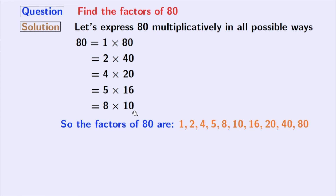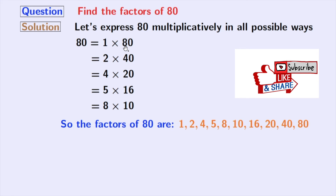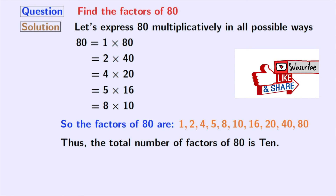So here are the factors of 80, which are 1, 2, 4, 5, 8, 10, 16, 20, 40, and 80. So the total number of factors of 80 is 10.